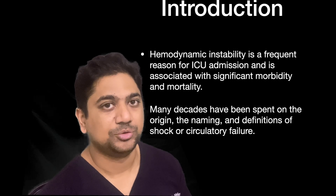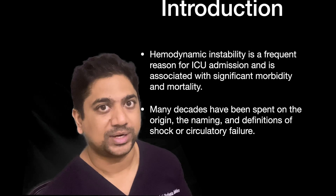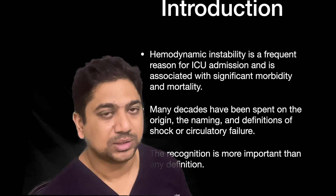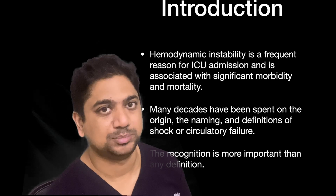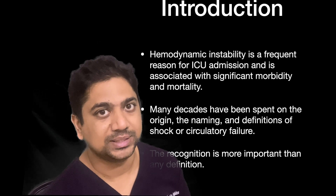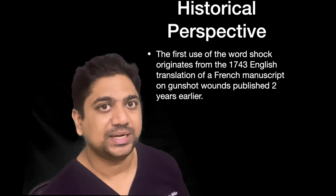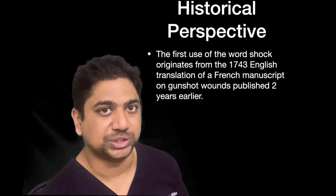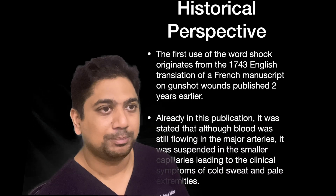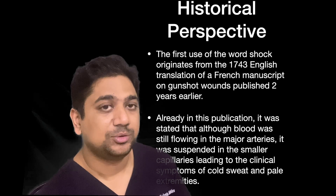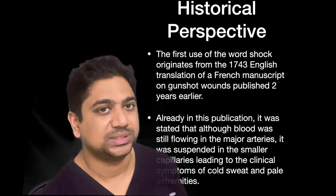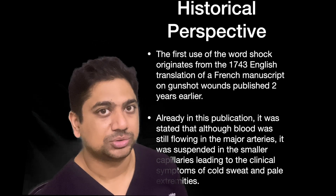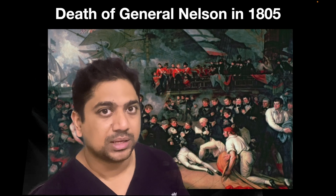Many decades of research have gone into finding the correct definition and terminology of shock or circulatory failure. However, more than the definition, what is more important is early recognition. The first use of the term 'shock' came in 1743 in an English translation of a French medical literature describing a patient who died of gunshot injury. Notably, blood was still flowing in the major arteries, but in the microcirculation and capillaries the blood was in complete standstill, showing that microcirculatory failure is the major cause of shock.